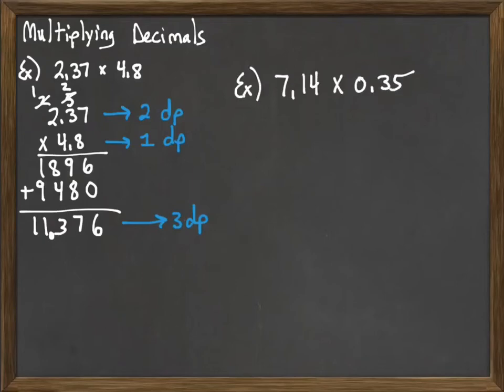Let's consider a second example here. We have the decimal 7.14 times 0.35. Again, you do not need to line up decimal points when multiplying decimals. We just write it down as a regular old multiplication problem. And for the moment, forget that we have decimals in play.